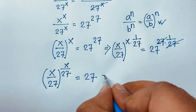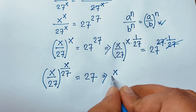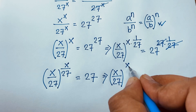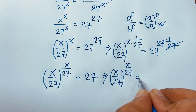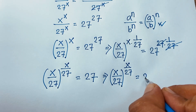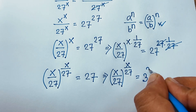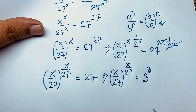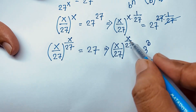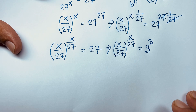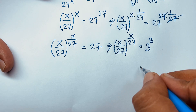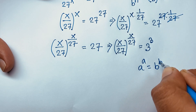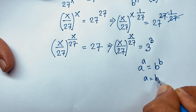Now at this moment, you can see x over 27 raised to the power x over 27 is equal to 27, which is 3 to the power 3. Now look — this base value and this exponent value are the same, and on the right side 3 and 3 are also the same. By the exponential law, if a to the power a equals b to the power b, then a equals b.